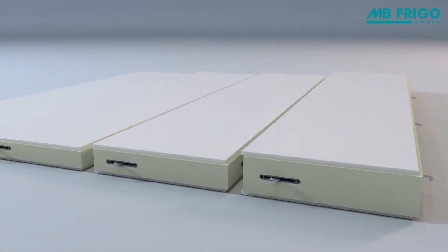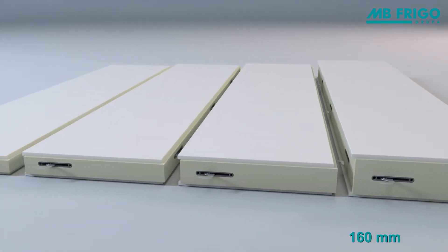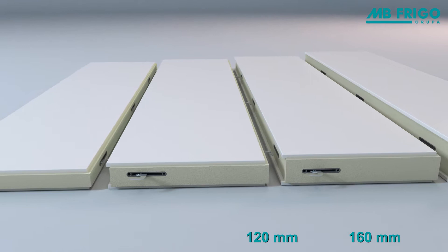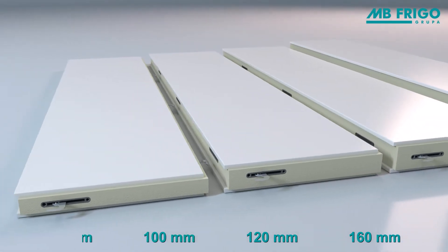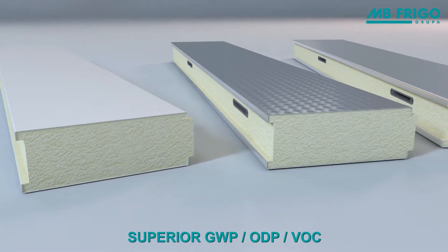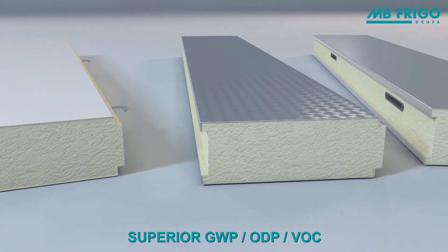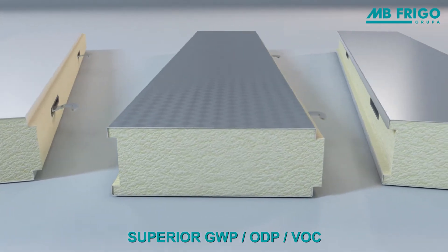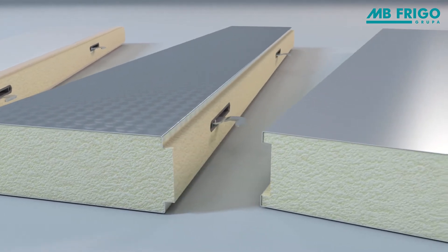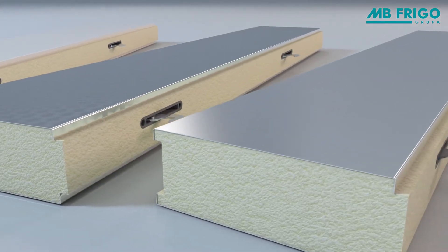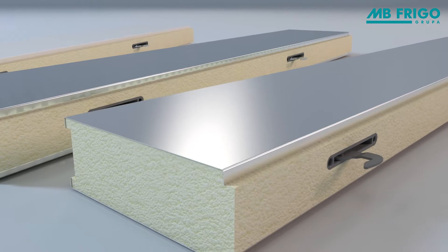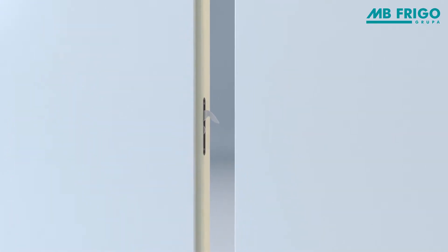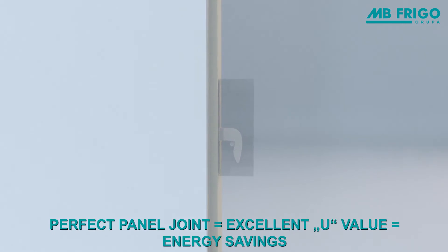We make panels with the following thicknesses: 160, 120, 100, and 80 millimeters. Our panels are filled with HFO foam, which has excellent heat insulation properties and conforms to the regulation on certain fluorinated greenhouse gases. Automated production and precise panel connections prevent air infiltration from outside and into the cold room, and thus contribute to achieving the energy efficiency standards prescribed by the eco-design directive.